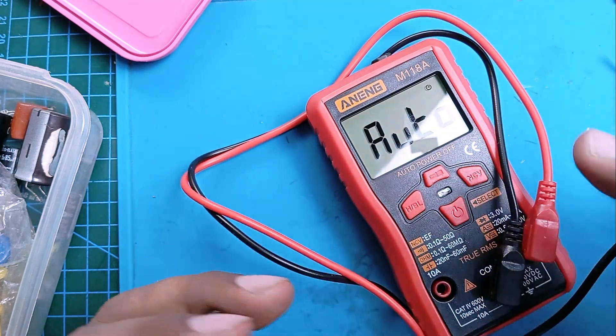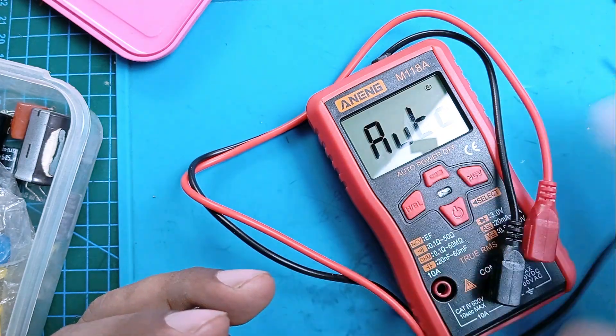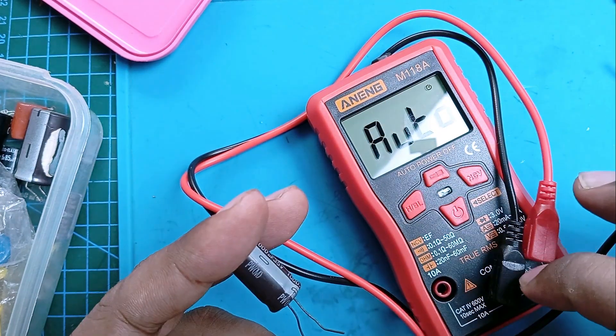Even though it is an auto-range multimeter, if you select things manually then it can measure things faster.